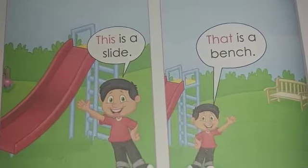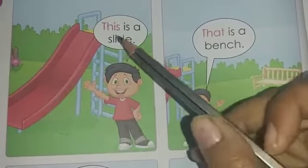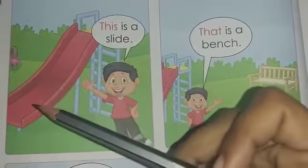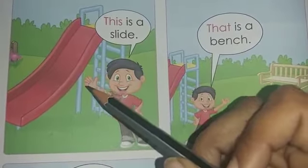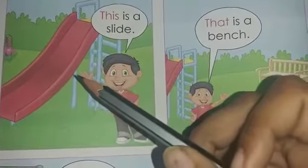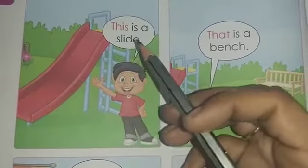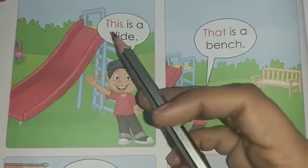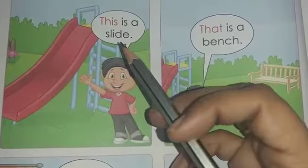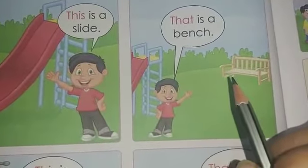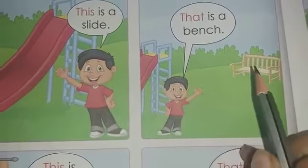Let's see a few examples given on page number eight. You can see this boy who's standing in a park nearby the slide. Because he is standing very close to the slide, he'll say 'This is a slide'.